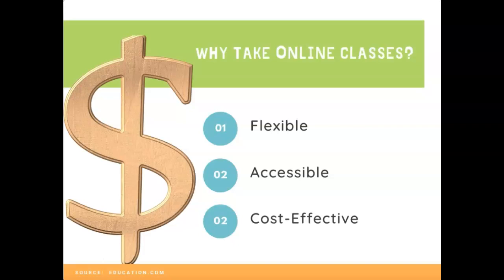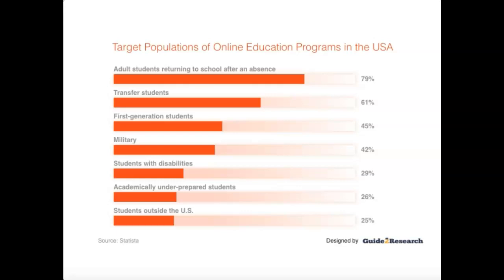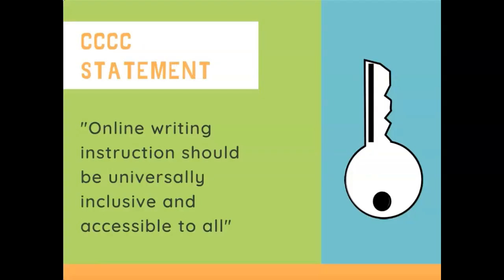On the next slide, you can see how diverse the students are that are targeted for online education programs, ranging from adult students who are working, first-generation college students, military, and students with disabilities. Meeting their needs is a challenge, but the first guiding principle for effective online writing instruction is that it should be universally inclusive and accessible.